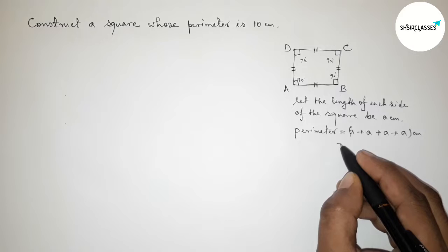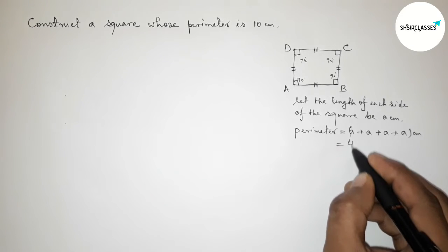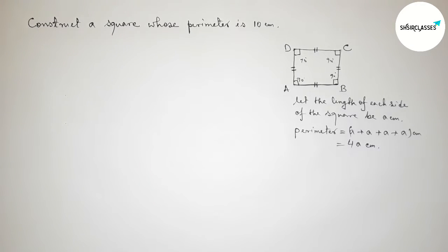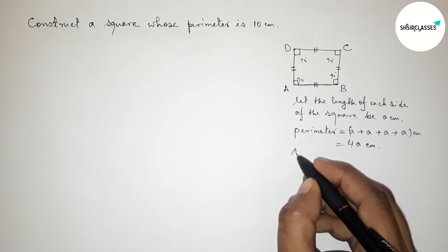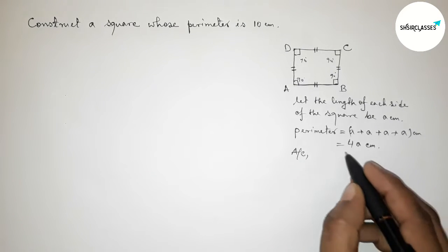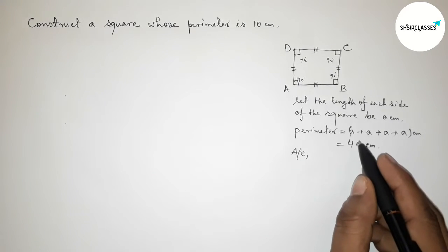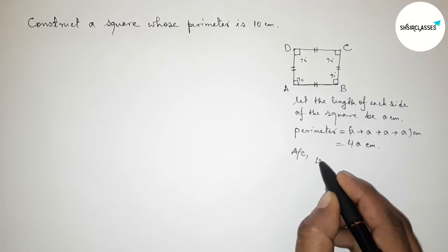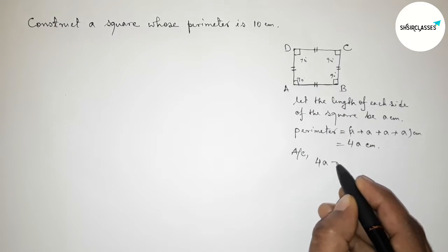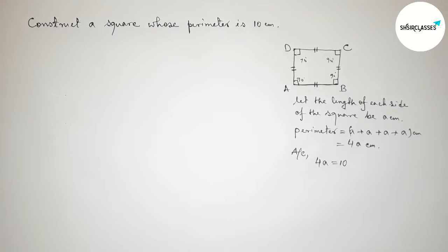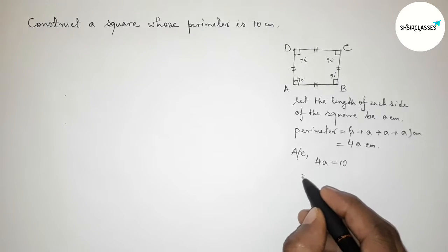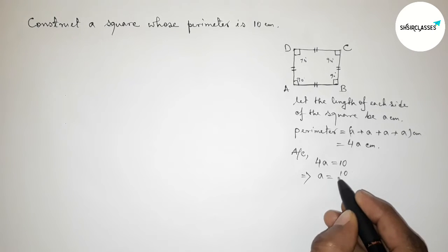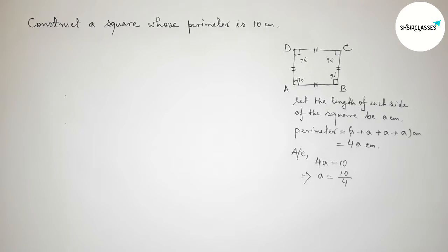Now according to the condition, this perimeter must equal 10. So 4a equals 10. Simplifying this, a equals 10 divided by 4.